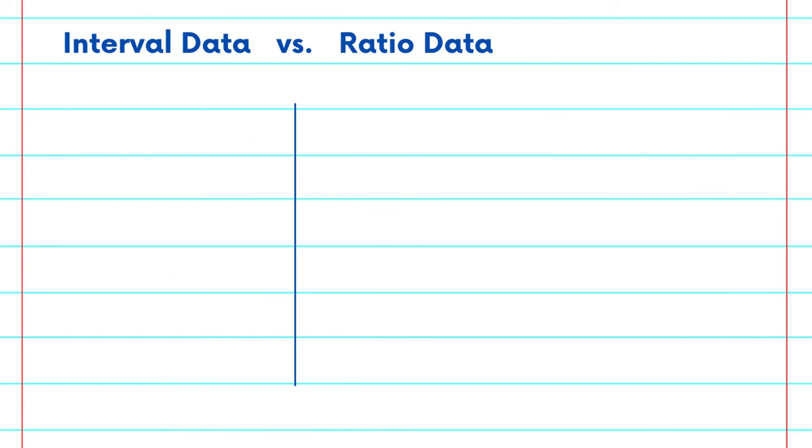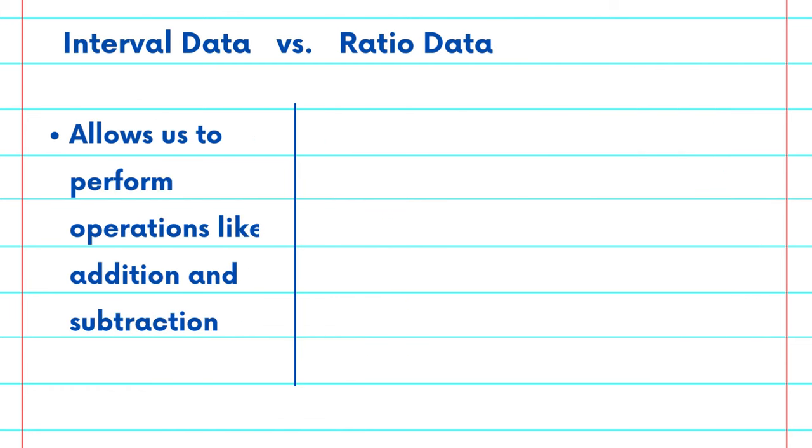Let's compare these two. Interval data allows us to perform operations like addition and subtraction. For instance, we can say that 20 degrees Celsius is 10 degrees warmer than 10 degrees Celsius. Ratio data goes a step further.